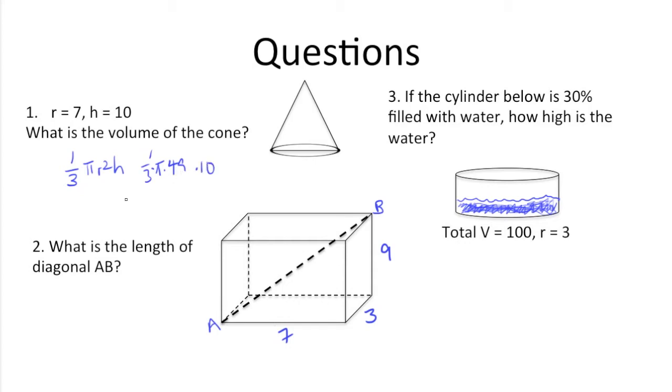All we need to do is multiply this out, so we get 49 times 10, which is 490 pi, all divided by 3.